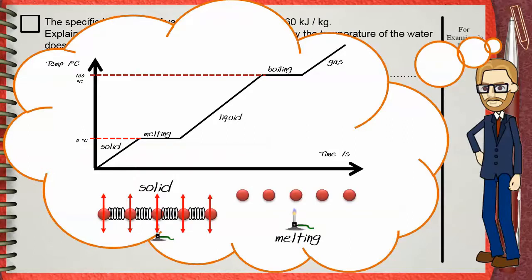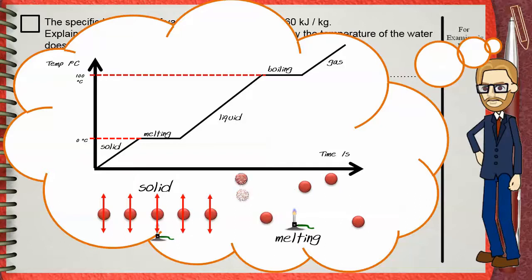When the temperature reaches zero and heating does not stop, molecules will not increase their kinetic energy anymore. Instead, the heat energy gained is used to break bonds between these molecules and separate them from each other, so the solid changes to liquid.